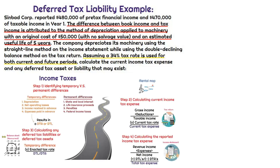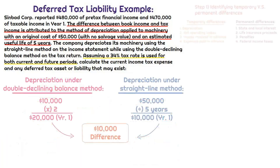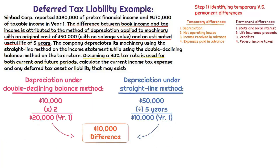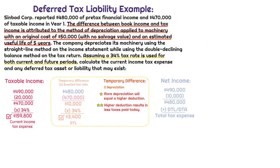Let's take a look at our mental map. Step one: we need to determine if a temporary difference exists. A temporary difference does exist because depreciation methodology is a temporary difference — this is something that will reverse in the future. At the end of the day, we're going to depreciate this asset all the way down to zero on both the tax return and the income statement. The temporary difference is $10,000: the $50,000 depreciated straight-line over five years gives $10,000 per year on the income statement, whereas in year one the double declining balance method gives $20,000 of depreciation expense on the tax return.